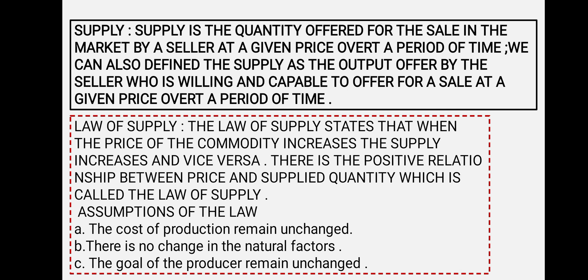The law of supply states that supply is directly proportional to price — there is a positive relationship between price and quantity supplied. The assumptions of the law of supply are: cost of production remains unchanged, there is no change in natural factors, and the goal of the producer remains unchanged.